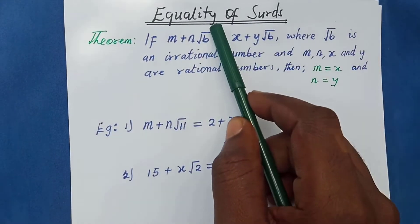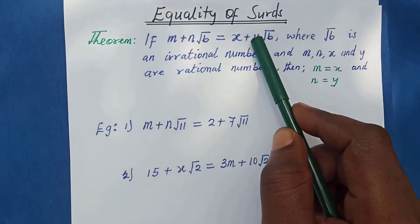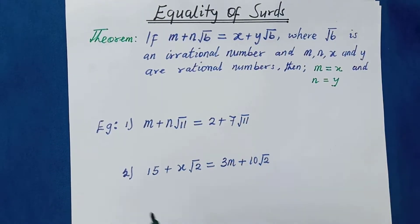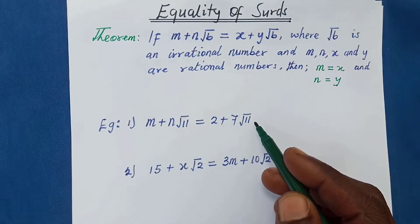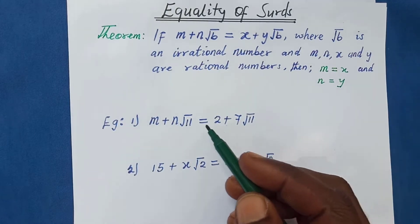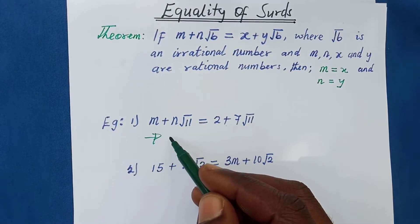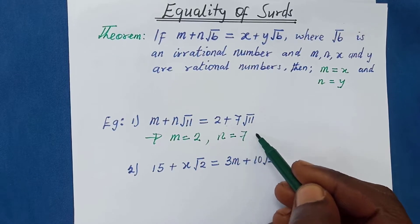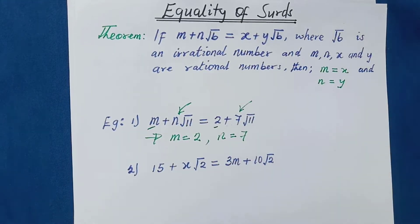For example, if you have m plus n root 11 is equal to 2 plus 7 root 11, the surds are the same on both sides — root 11 and root 11. So we can see that the number in front of the surd is equal to the number in front of the surd, and the numbers without the surds are also equal. This implies m is equal to 2 and n is equal to 7.